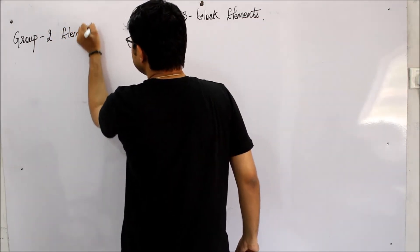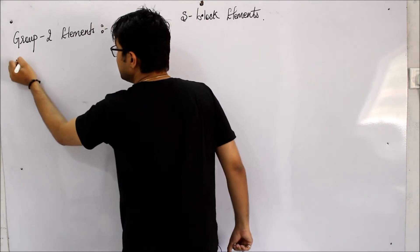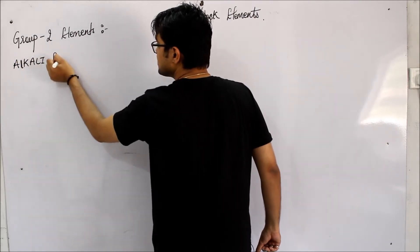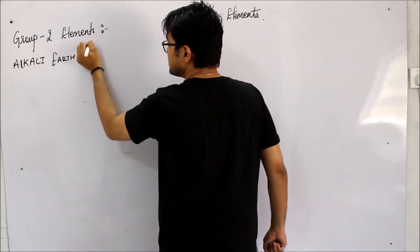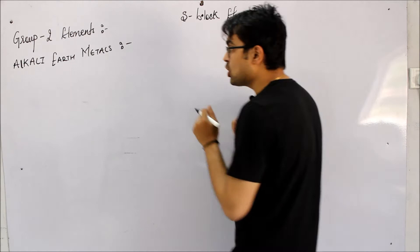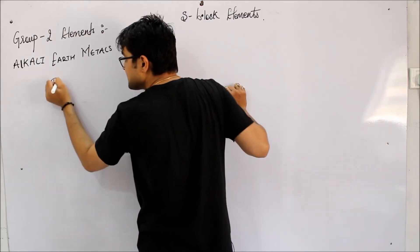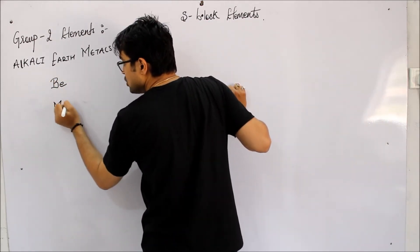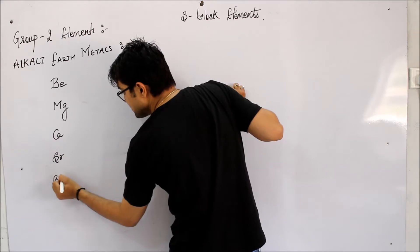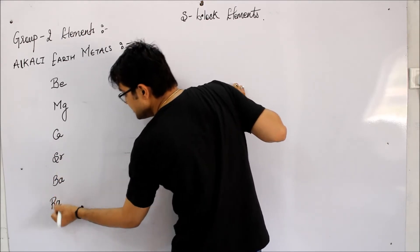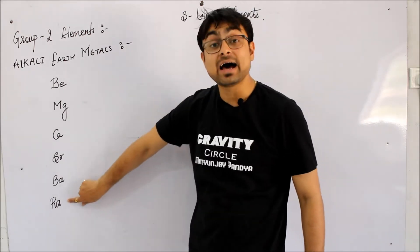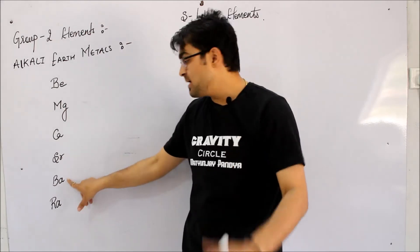Group 2 elements, and they are known as alkali earth metals. They are called as alkali earth metals.